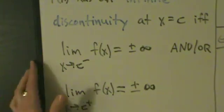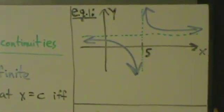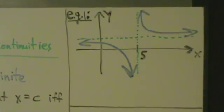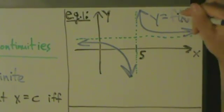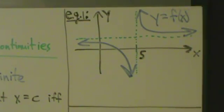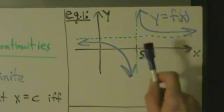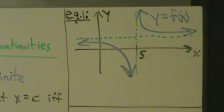Let's go ahead and look at some examples. Example one: here is y equals f of x. Let's take a look at what's happening at x equals 5. We have a vertical asymptote there, so let's take a look at the limits.